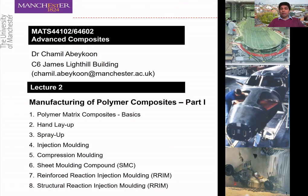Now we can start Lecture 2 in this course unit, which is focused on manufacturing of polymeric composites. This is Part 1, so there will be another lecture for the manufacturing of polymeric composites. We're going to look at the manufacturing of polymeric composites, metal matrix composites, and ceramic matrix composites. We'll start with polymeric composites, then move on to metal matrix and ceramic matrix composites.